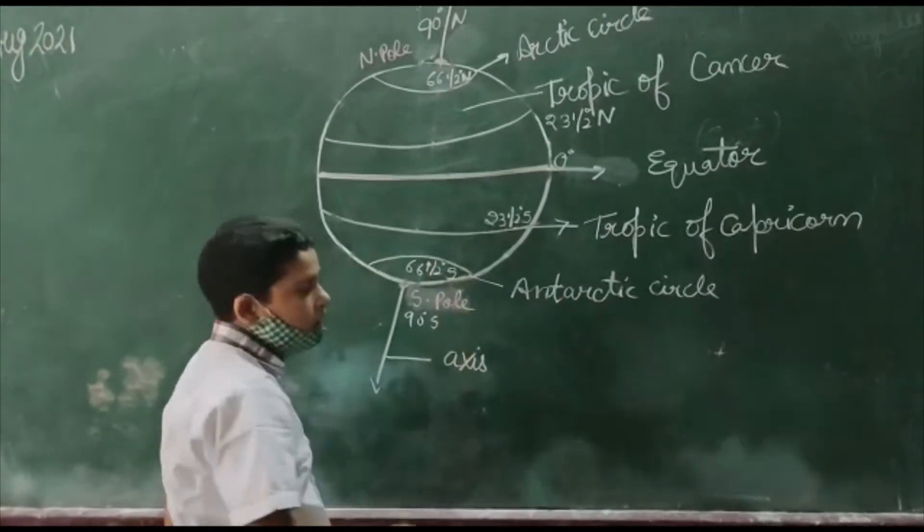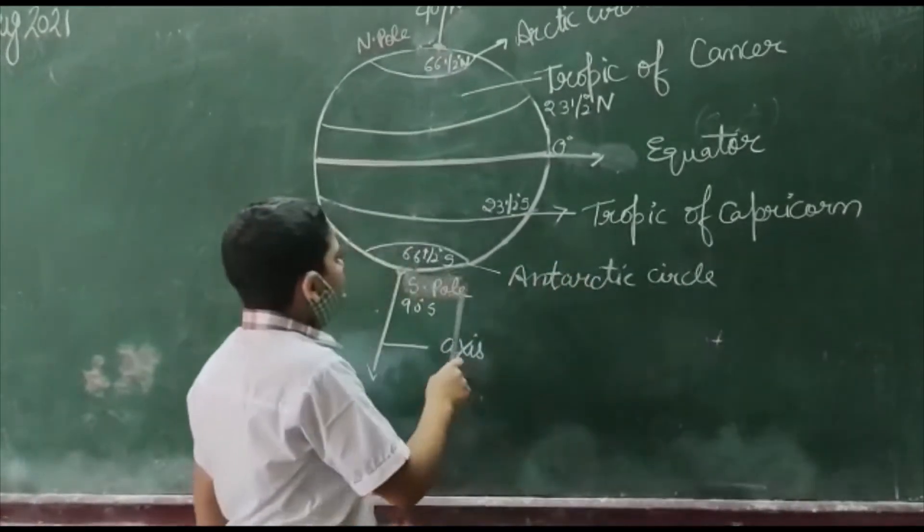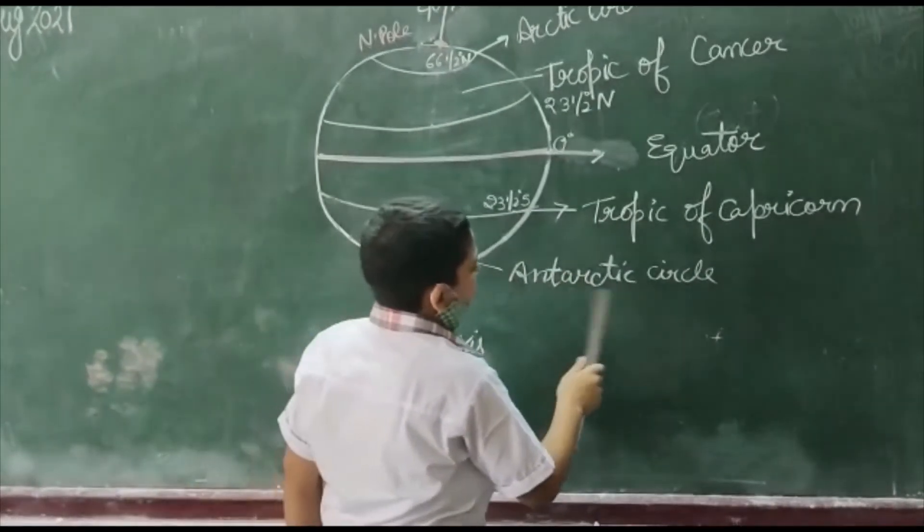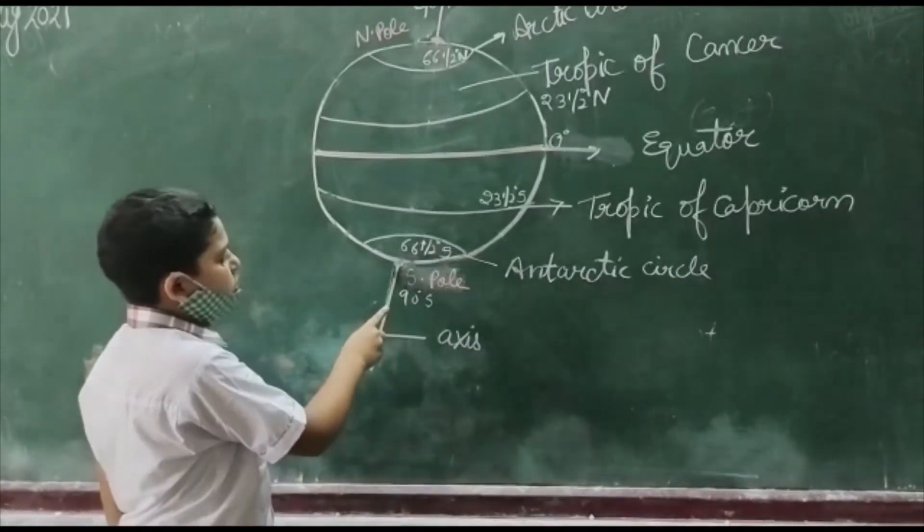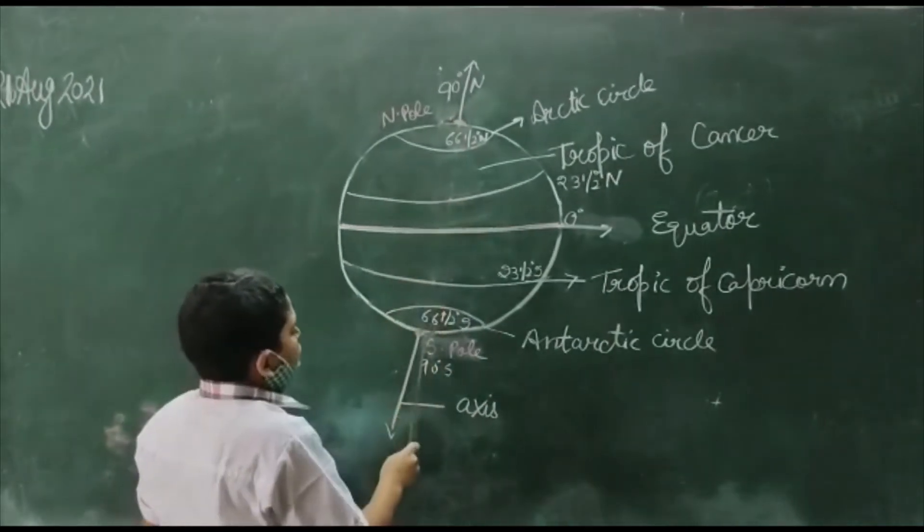Then we will go to the south. The second one is the Antarctic Circle. As you can see, this point is the South Pole. You can see the axis line through north to south.